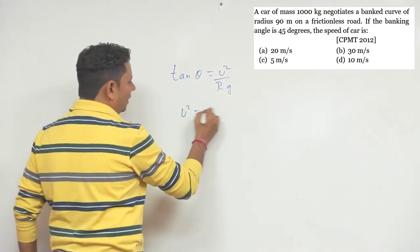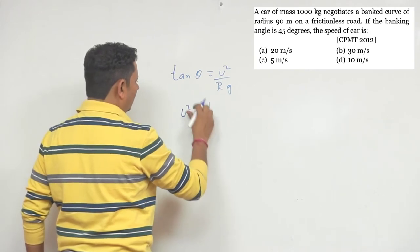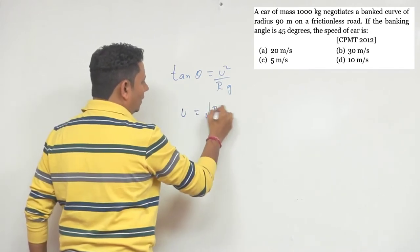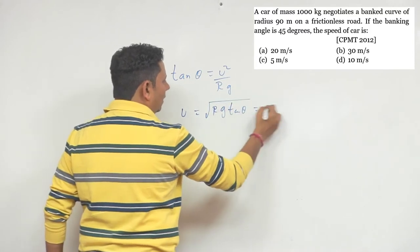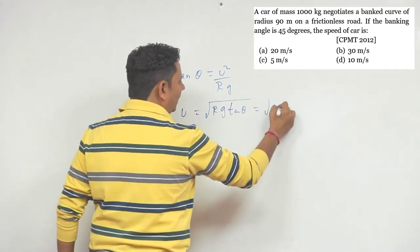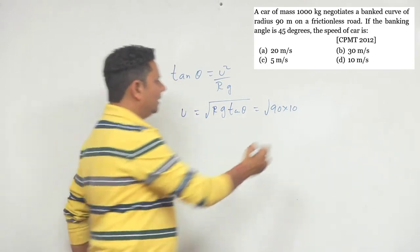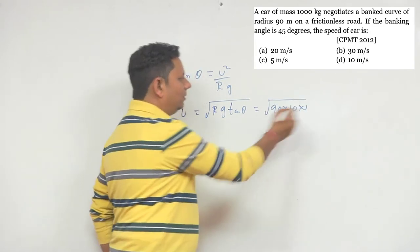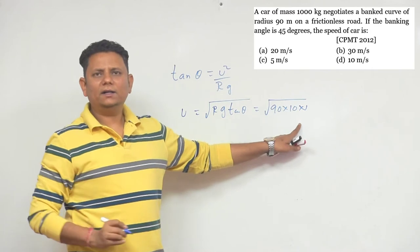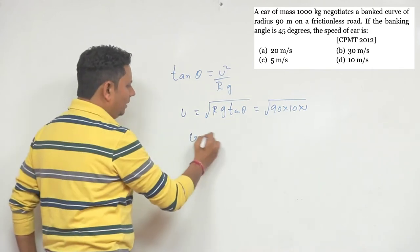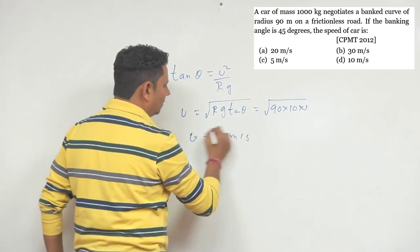So it will be V equals under root of RG tan theta. So 30 will be the right answer, 30 meter per second.